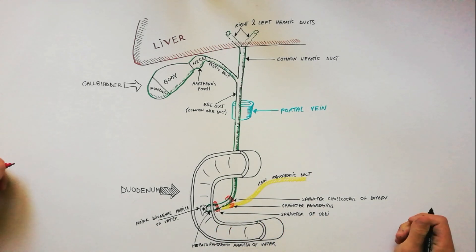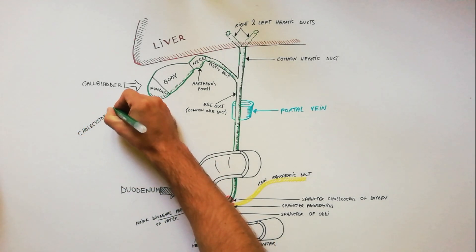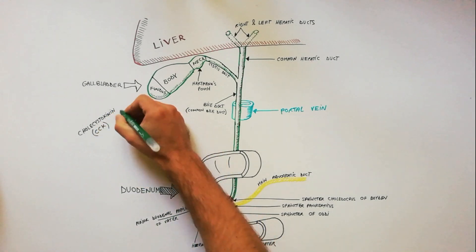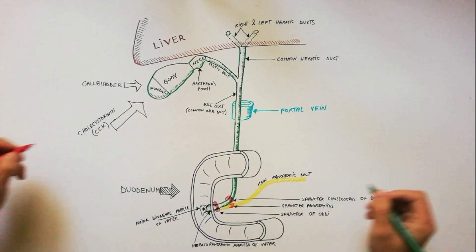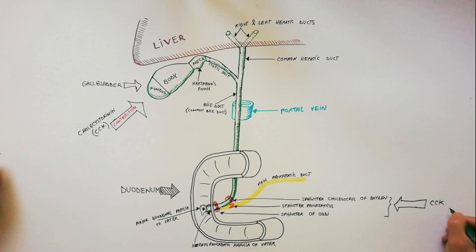The three sphincters are independent of duodenal musculature. The sphincters remain closed until the gastric contents enter the duodenum, stimulating its mucosa to release hormone called cholecystokinin. This hormone, in addition to causing contraction of the gallbladder, relaxes these sphincters, allowing bile and pancreatic secretions to enter the duodenum.